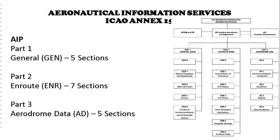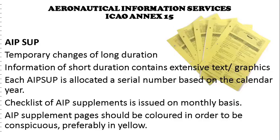Part 3 Aerodrome Data of the AIP has five sections. Aerodrome 0 is table of contents. Aerodrome 1 covers aerodromes, heliports, and introduction. Aerodrome 2 covers aerodromes. Aerodrome 3 is on heliports, and Aerodrome 4 provides detailed information about other aerodromes.